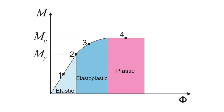To better explain inelastic bending, let's look at the relationship between moment and curvature during the bending test. A typical moment versus curvature diagram for steel under pure bending is shown below. Three main regions can be defined on this diagram: one, elastic; two, elastoplastic; and three, plastic region.